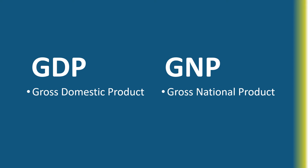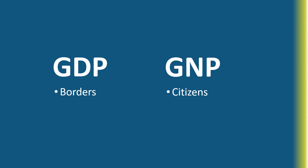We're primarily going to use GDP, but we also want to introduce a similar measure called GNP. GDP is gross domestic product, whereas GNP is gross national product. The big difference between GDP and GNP is what measurement it's focusing on. GDP measures what happens within a country's border, and GNP measures the production of the citizens of that country.